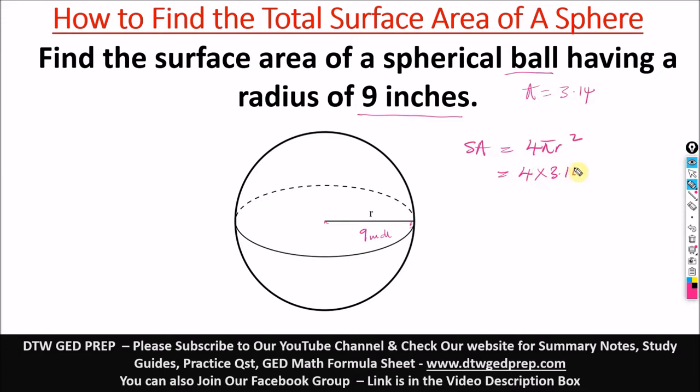Times our r is 9, so we have 9 squared. Don't forget the square from our formula here. When you punch this into the calculator, because this is always in the calculator section, when you multiply all this we are going to get 1017.36.